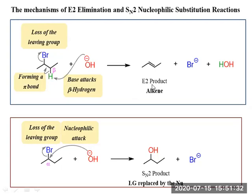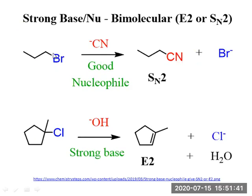Here, one condition forms an elimination product and another forms a substitution product — it depends on the various factors discussed. CN⁻ is a good nucleophile, so it replaces Br to give an SN2 product. But treating the substrate with OH⁻ (a strong base) gives E2 elimination product. In strong basic conditions, elimination is preferred; with a good nucleophile, substitution is preferred.